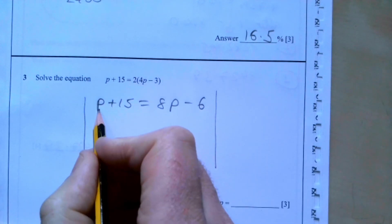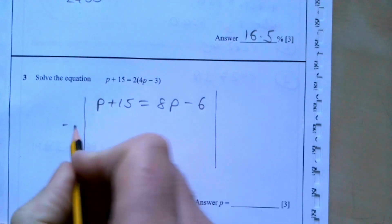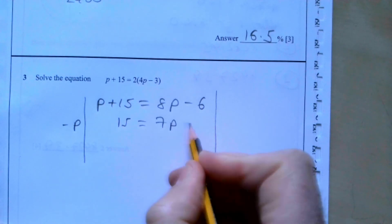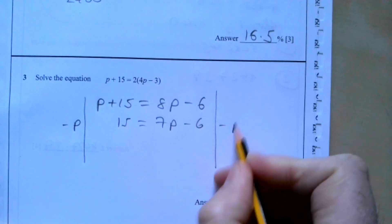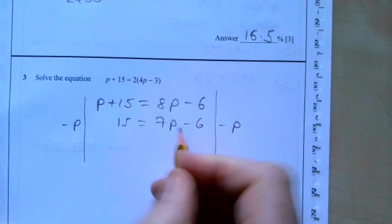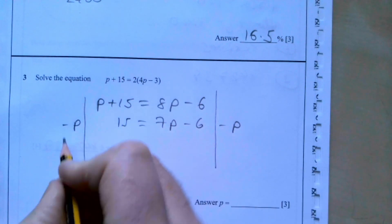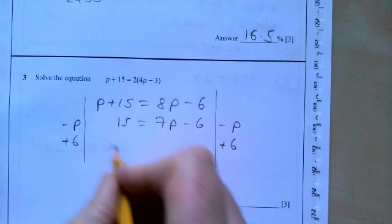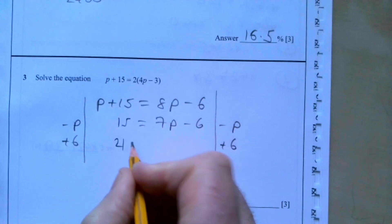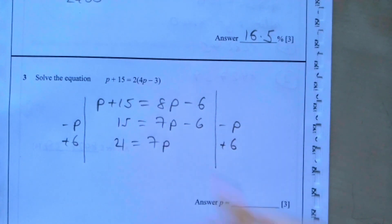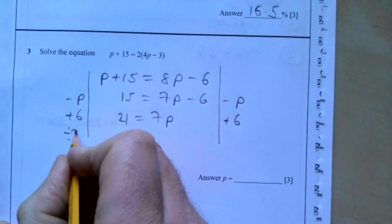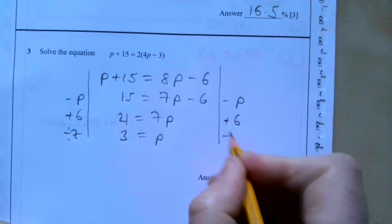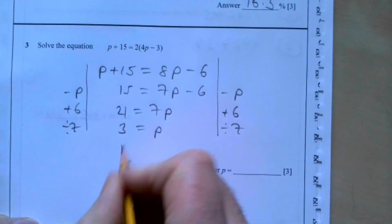We want to get rid of the smallest p term, so take p from both sides giving 15 equals 7p minus 6. Then add 6 to both sides to get p on its own.